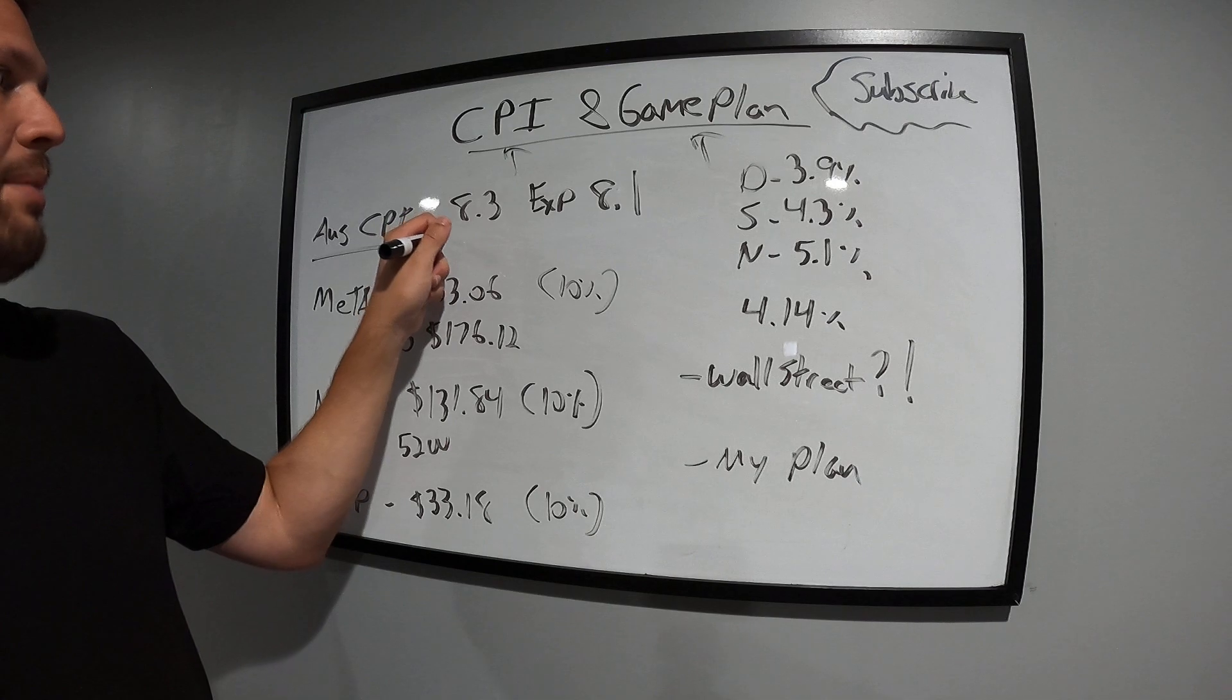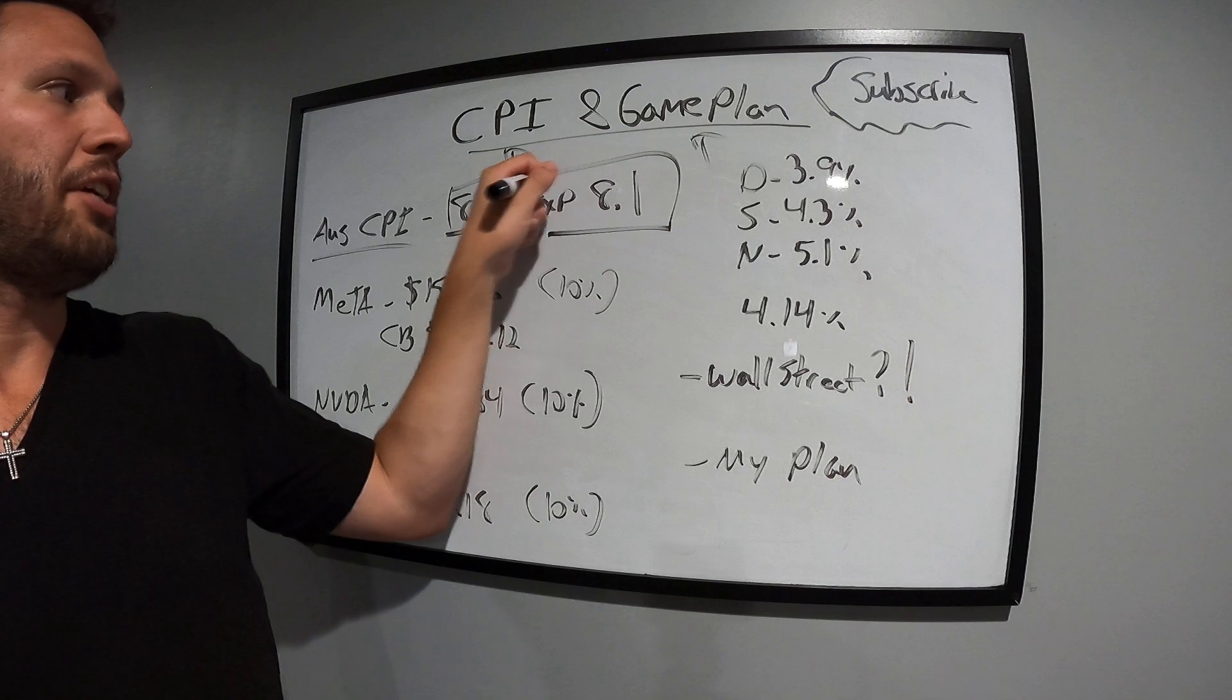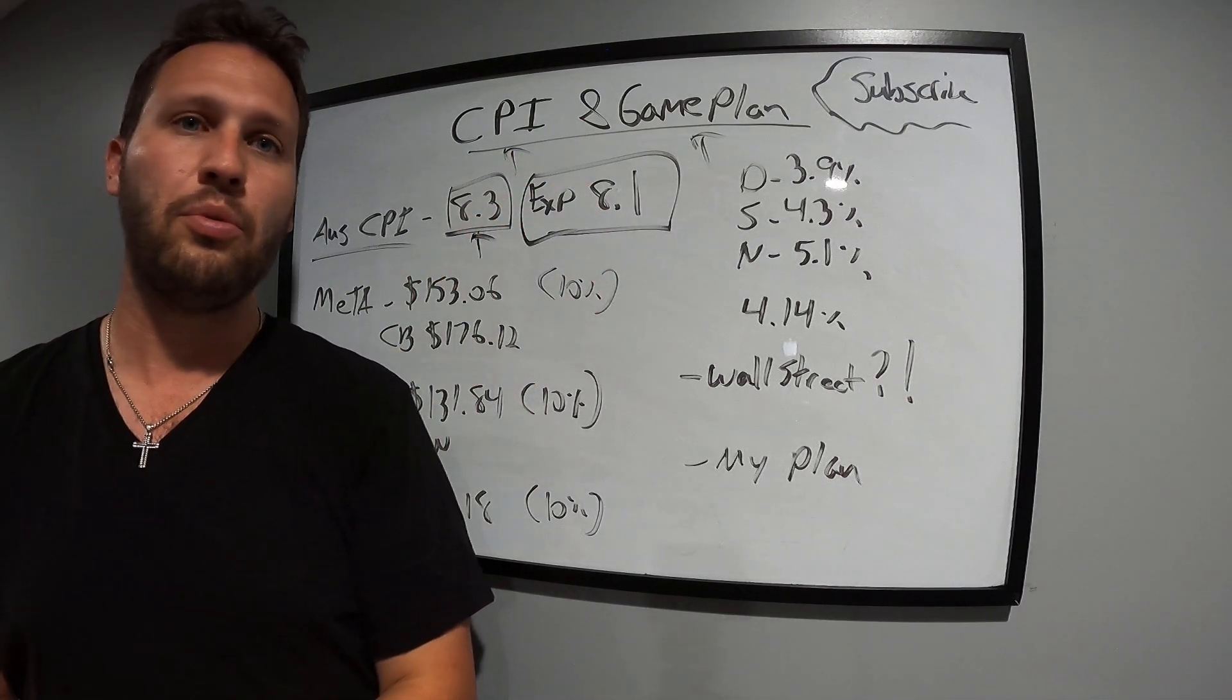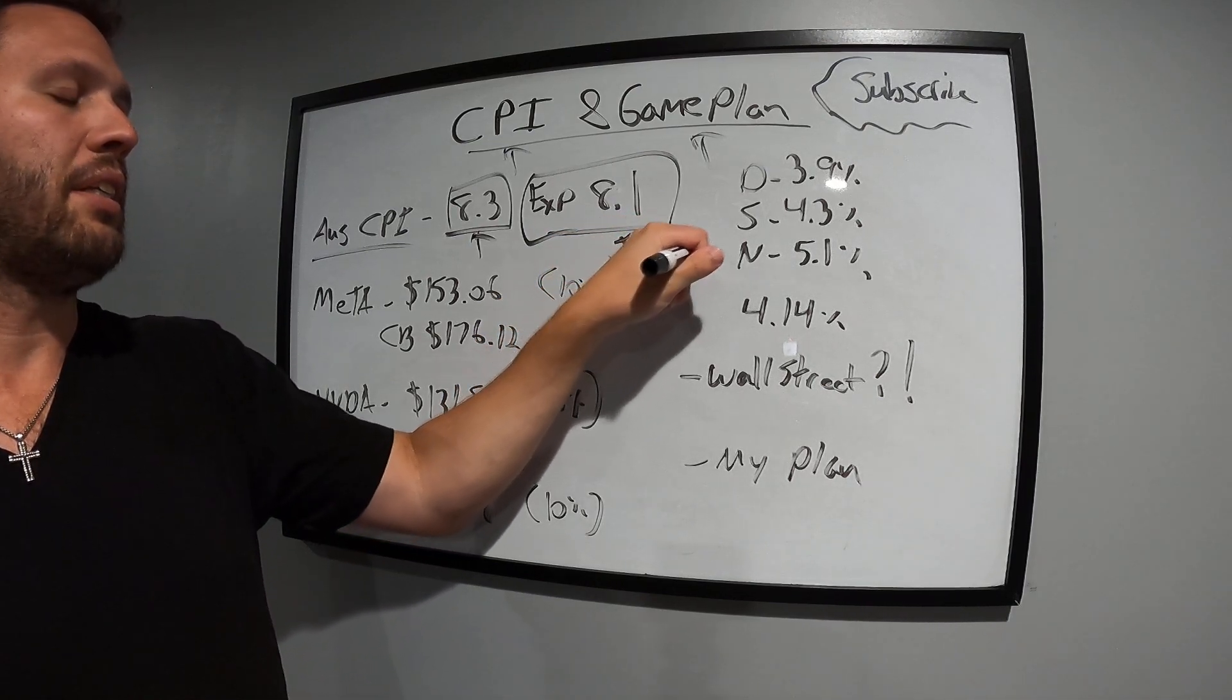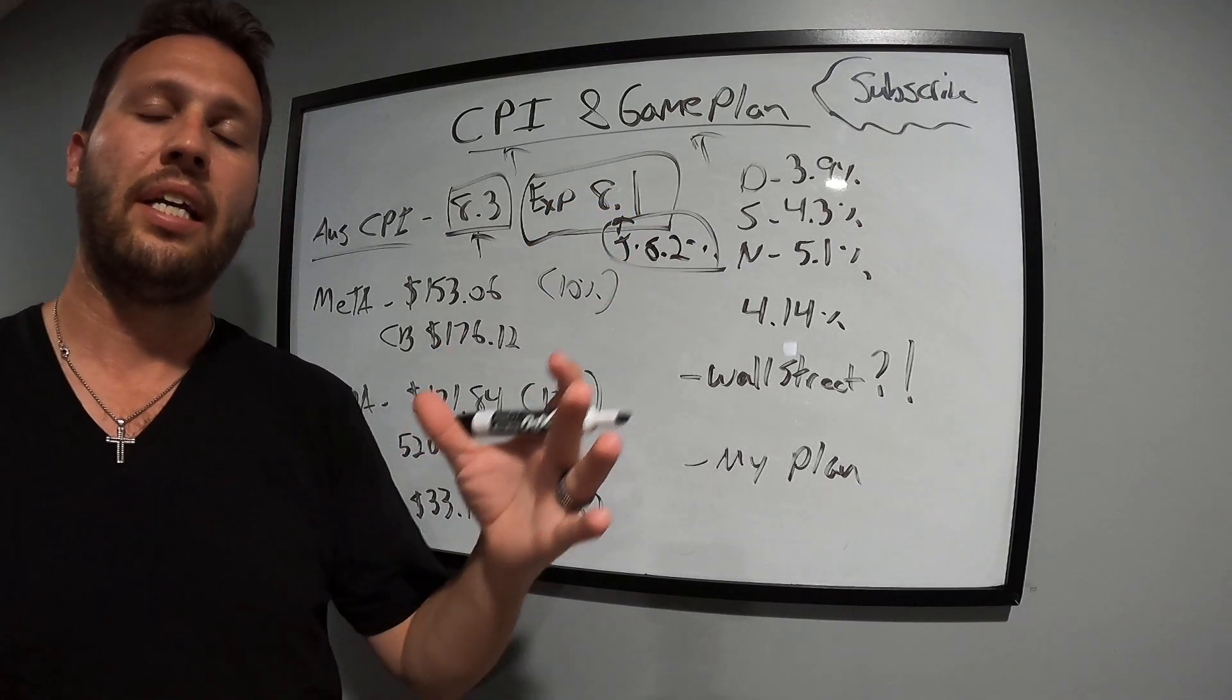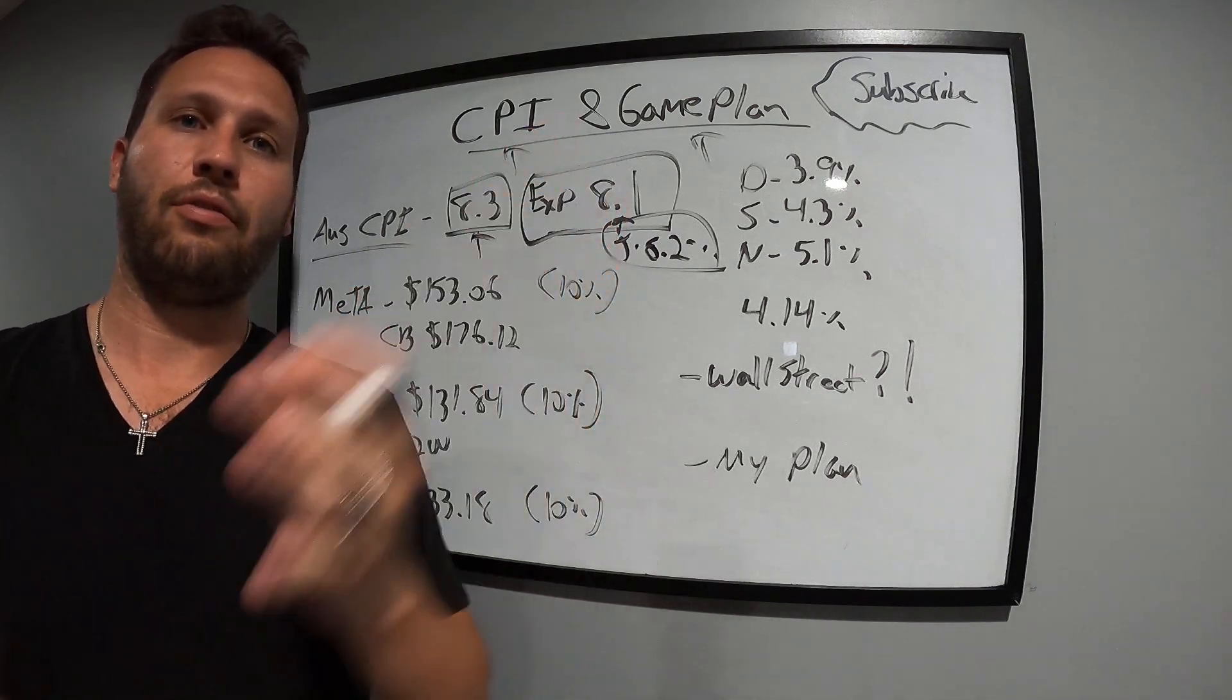So August CPI came in at 8.3%. That is higher than expectation. Expectation was 8.1%, so it missed by technically 0.2. The July CPI was 8.2, so we literally went up 0.1% from last month. So we inverted again and we are going up in inflation.